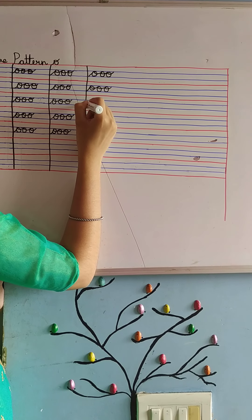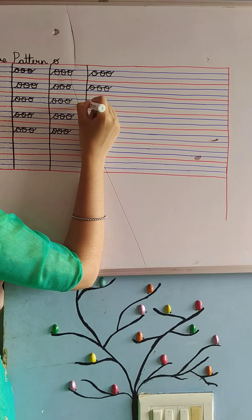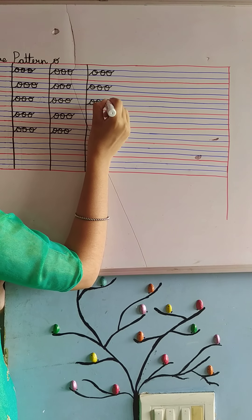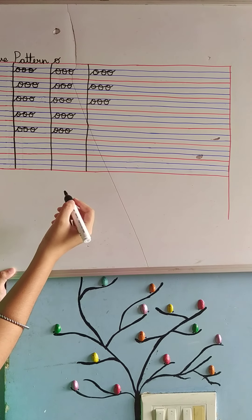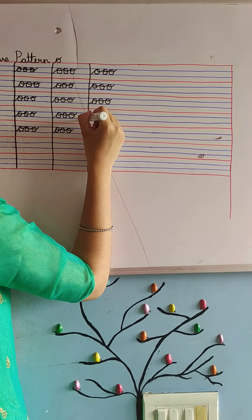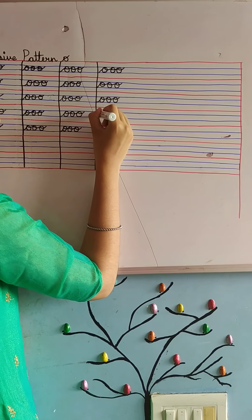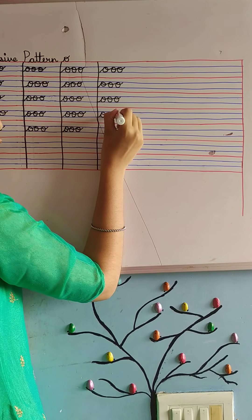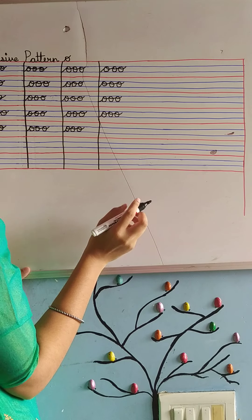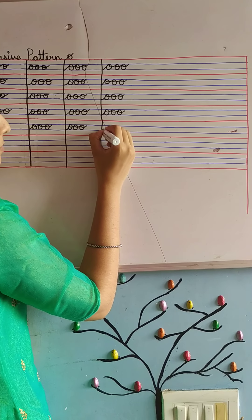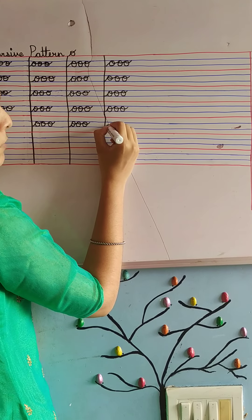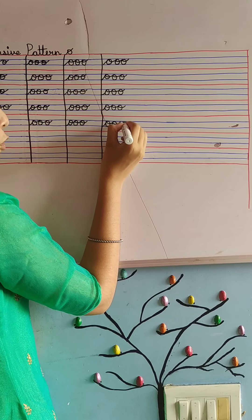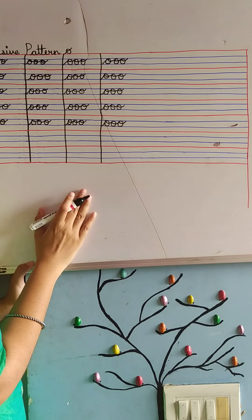Again, touching the blue line, second line, write O. O for oval. Again, O. O for octopus. Again, O — touching the second blue line with the margin. O for ostrich. Okay?